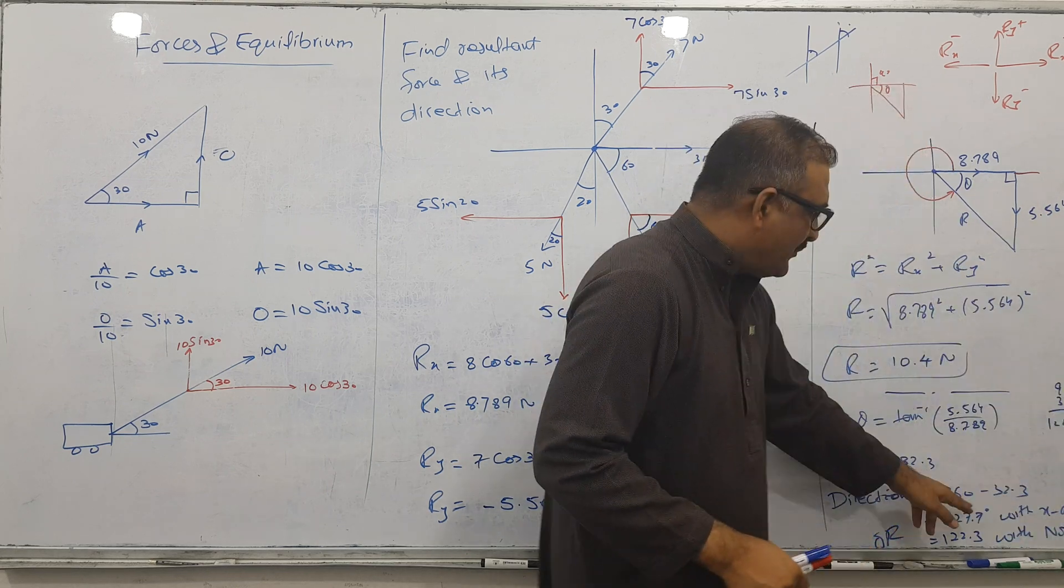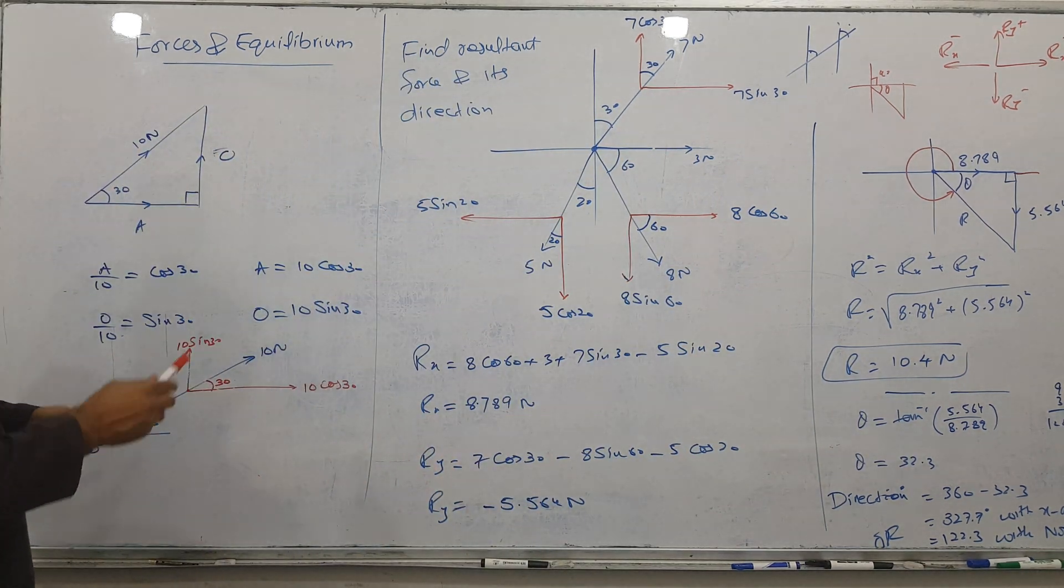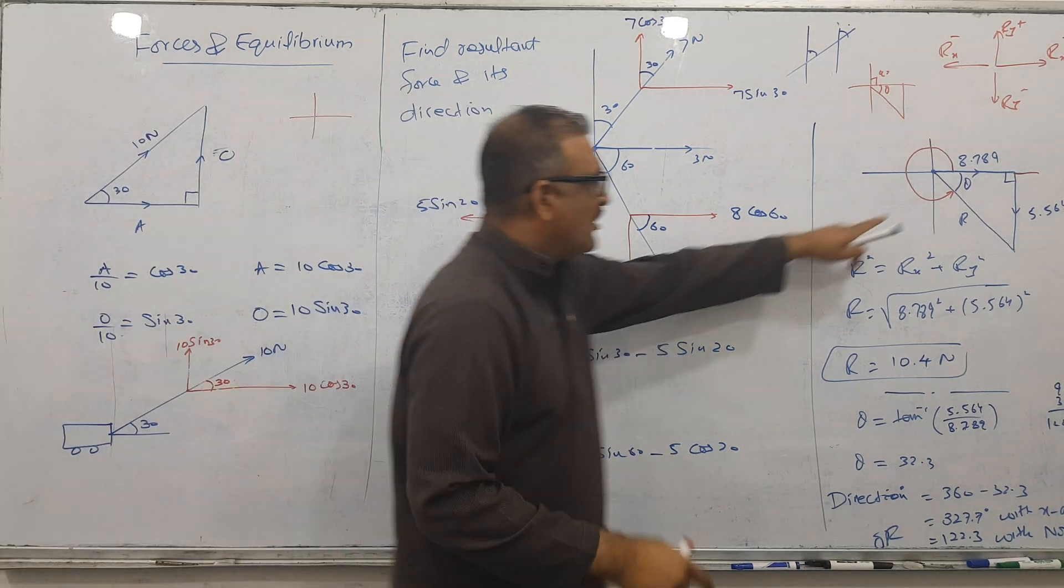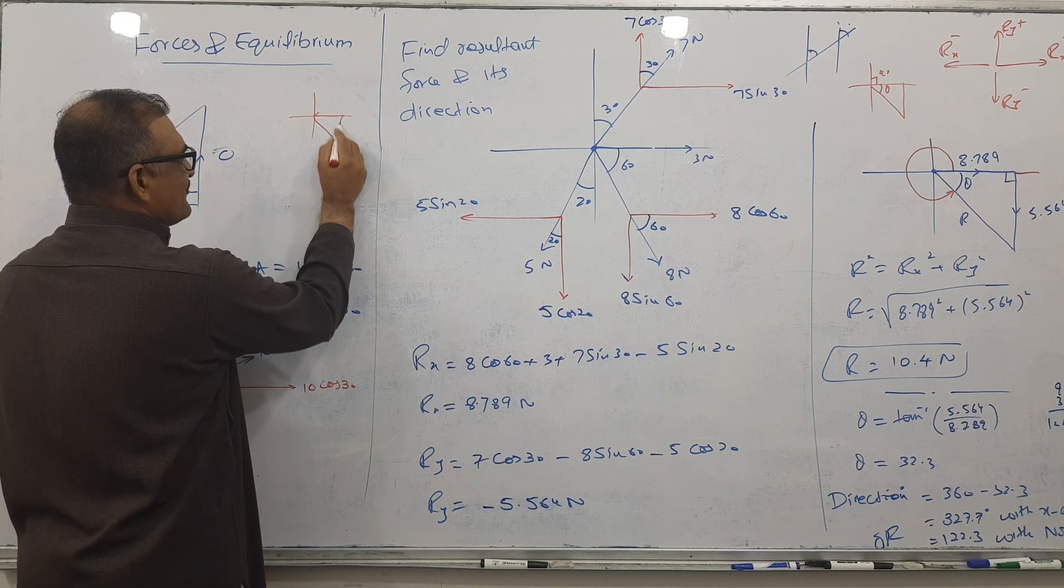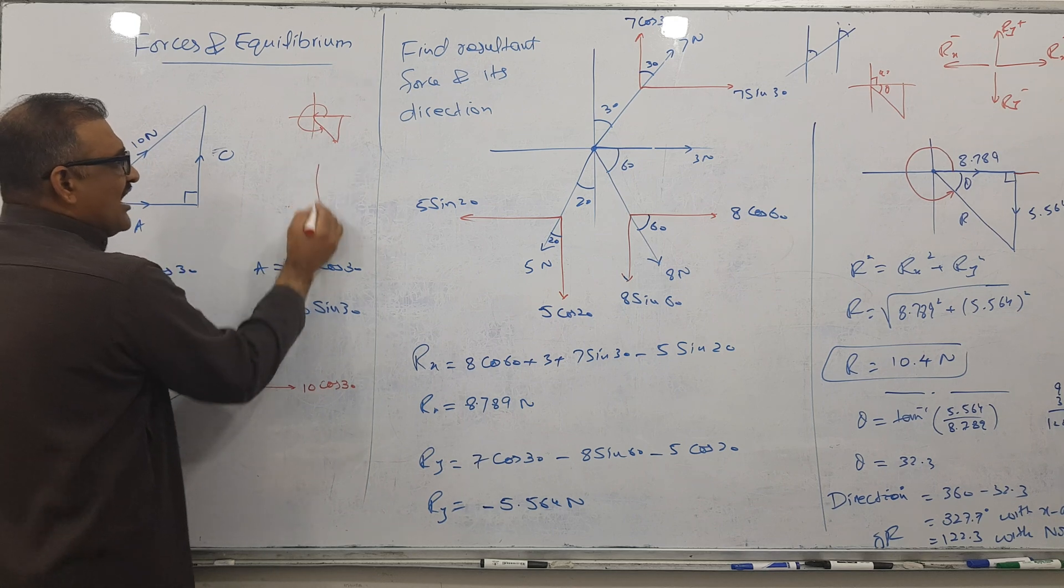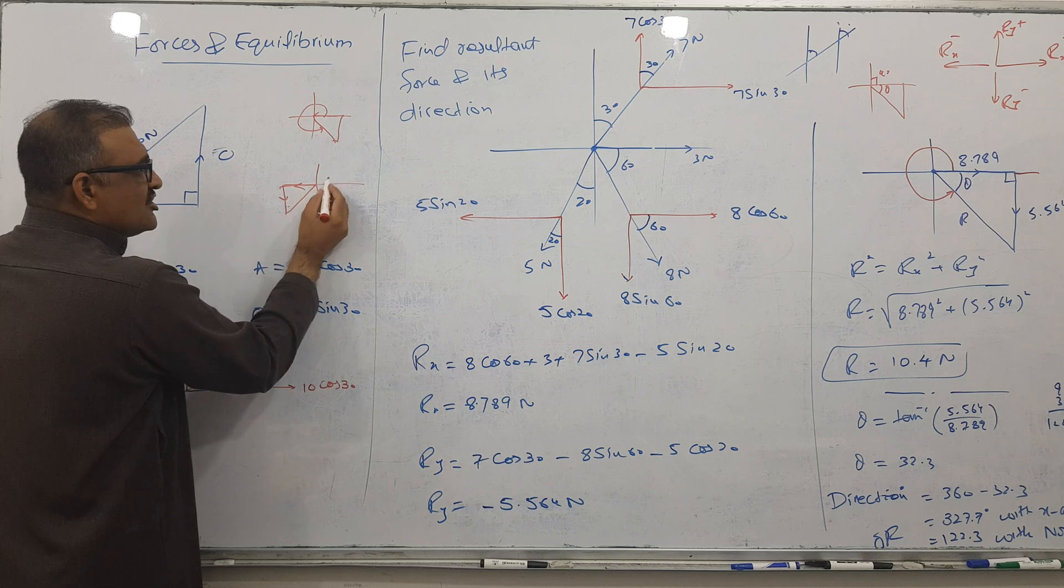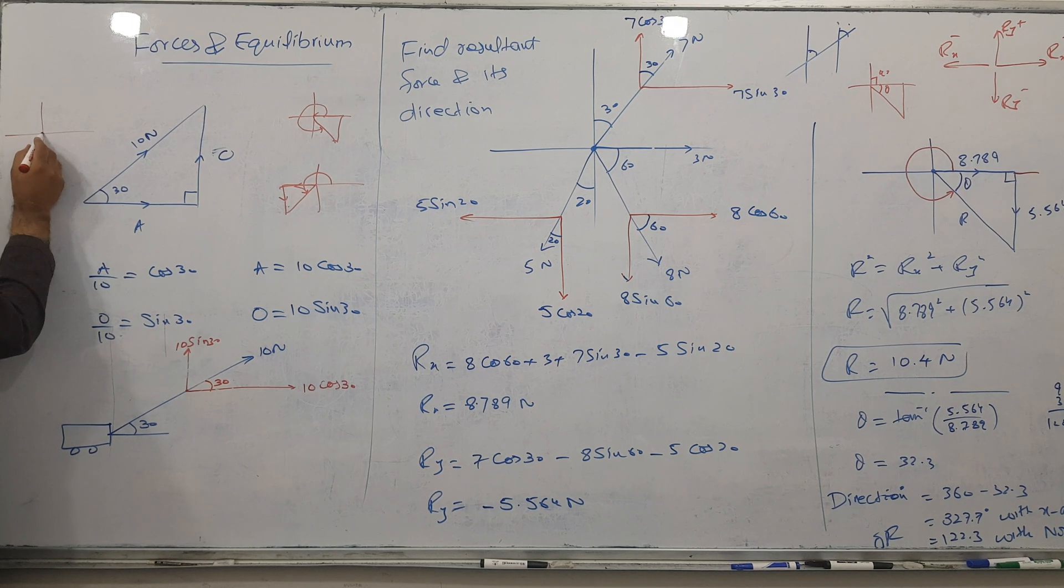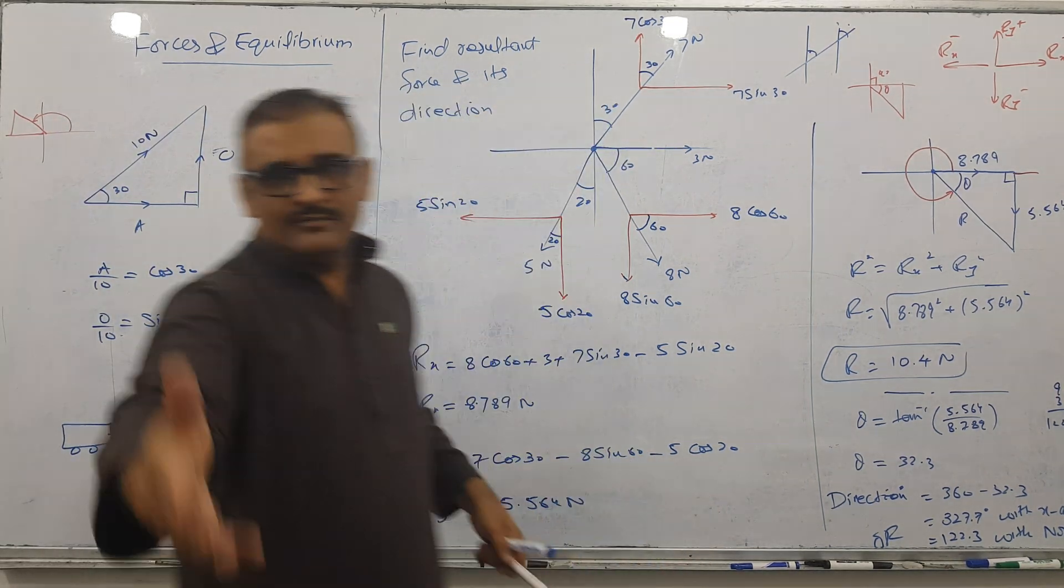If you see the mark scheme, both answers are correct - bearing or with x-axis. If Rx is positive and Ry is negative, you get this kind of triangle. If Rx is negative and Ry is positive, this is the answer. Every time start from x-axis until the line stops.